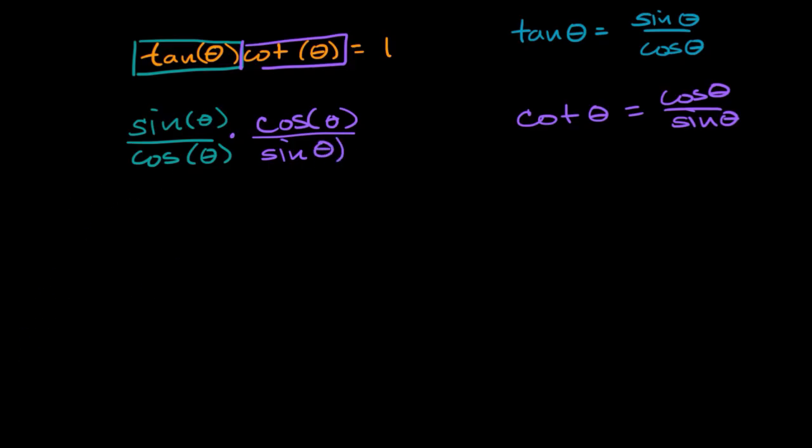We can immediately see that in our numerator, we have sine of theta times cosine of theta, and in our denominator, we have sine of theta times cosine of theta. You could even think about it that sine of theta divided by sine of theta is one, and cosine of theta over cosine of theta is also going to be one for any theta, so this is just going to be equal to one.